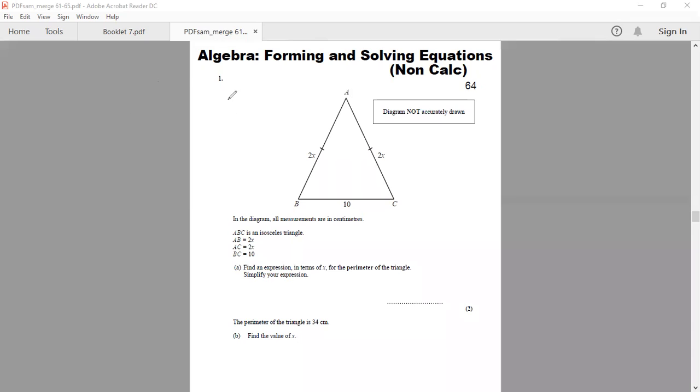Let's start from question number one. It says, in the diagram, all measurements are in centimeters. ABC is an isosceles triangle. AB is 2X, AC is 2X, BC is 10 centimeters. Find an expression in terms of X for the perimeter of the triangle, simplify your expression.